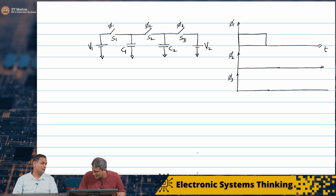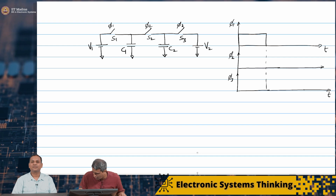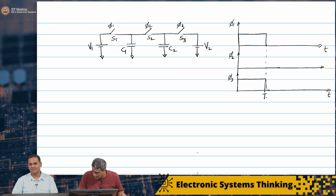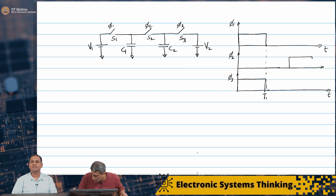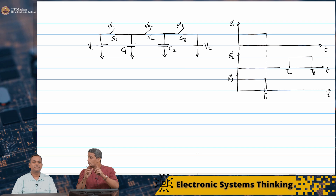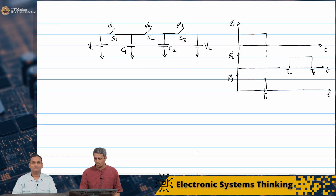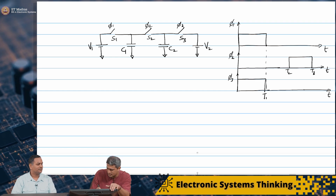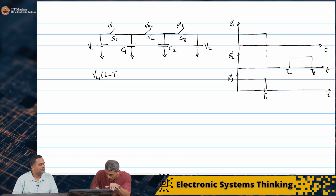Because phi 2 is open, the switch is open, the two circuits are independent. So for the same time — we have these two capacitors charging up to their respective voltages at t equal to T1.